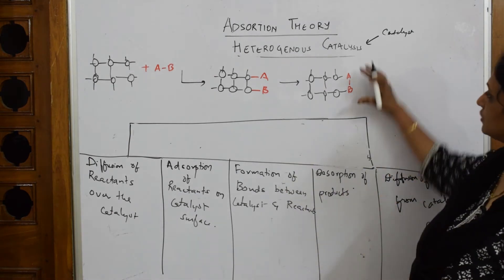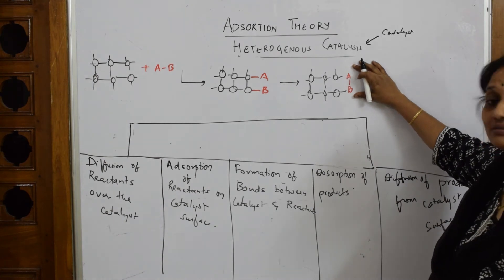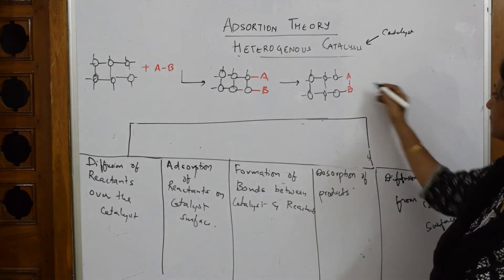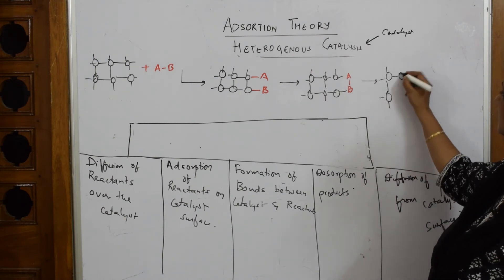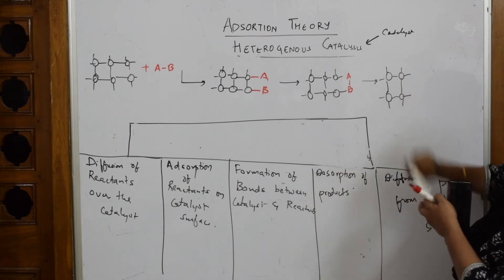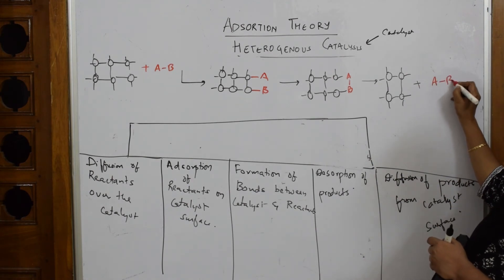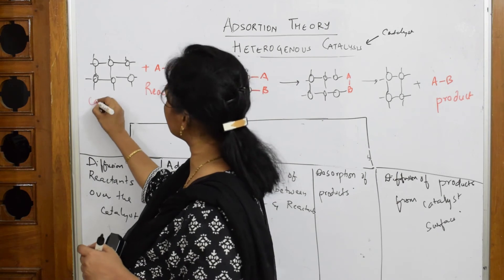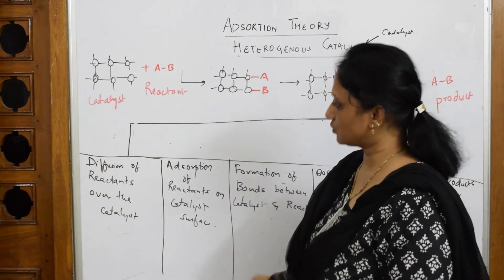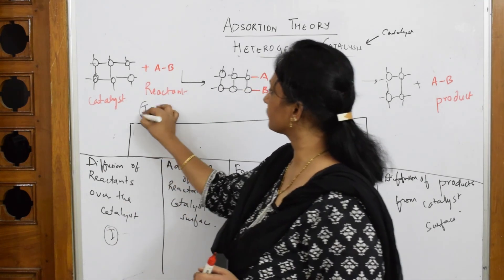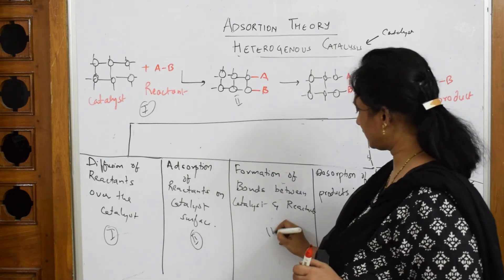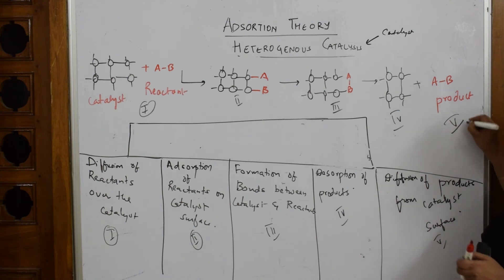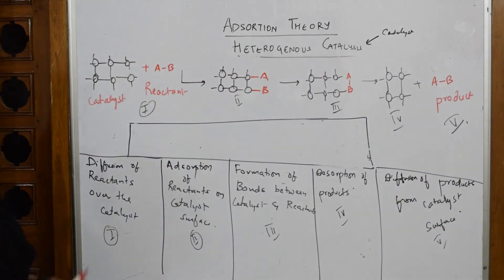Once the reactants attach to the active sites, they get converted into products. Step four is desorption — the product separates from the catalyst surface, and the catalyst is regained. Step five is diffusion of products away from the catalyst surface. The diagram is labeled: steps one and five are diffusion, steps two and four are adsorption and desorption, and step three is bond formation.